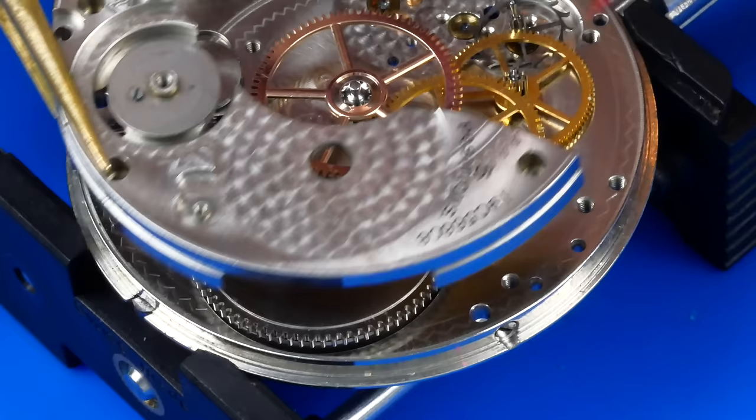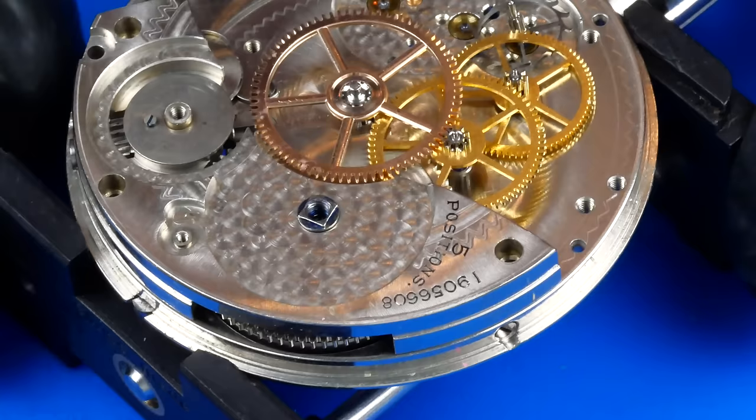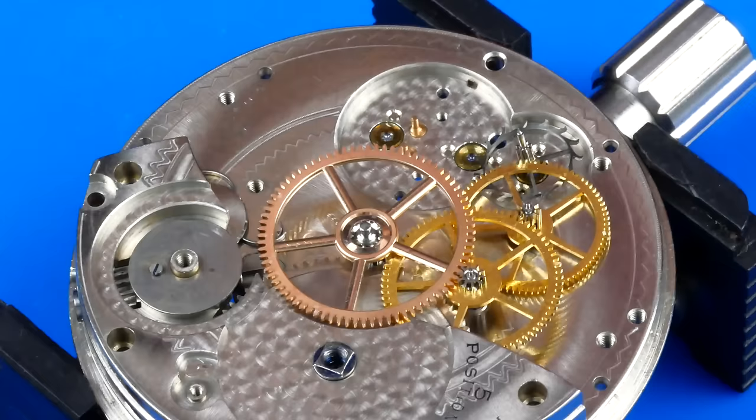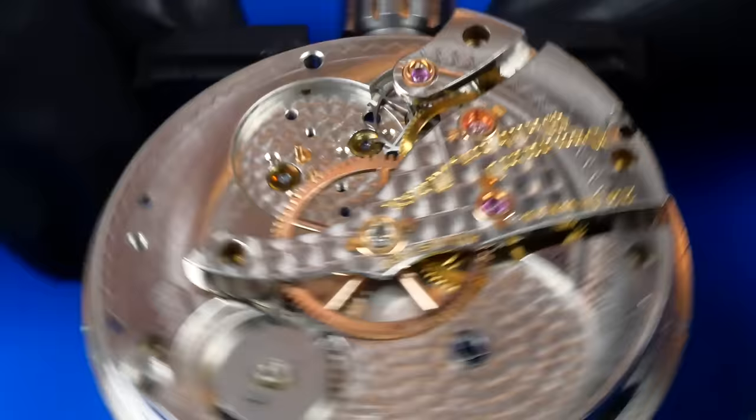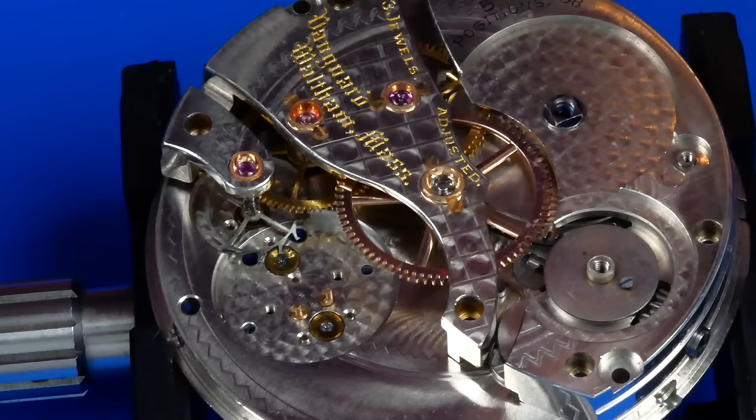The barrel bridge is now installed. The train wheel bridge is lowered into place. I'll now carefully seat each of the pivots before thinking about tightening the plate. Even so, the screws aren't fully tightened until the very end.